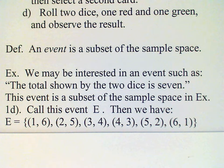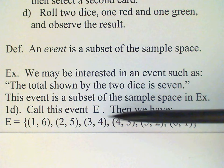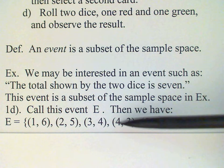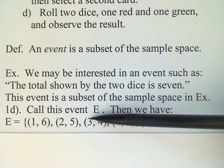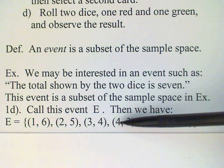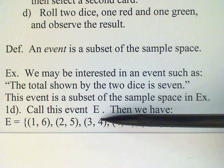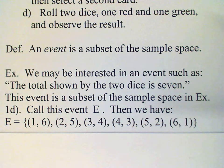In this event E, we'll have the outcomes (1,6), (2,5), (3,4), (4,3), (5,2), and (6,1). Remember, (4,3) and (3,4), for example, are not the same because this is the red die and this is the green die. So red three, green four is not the same as red four, green three, even though the total is the same.